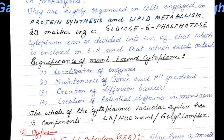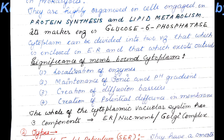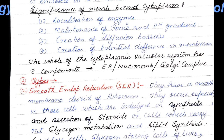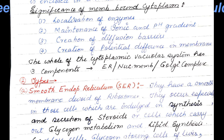The significance of a membrane-bound system is that it localizes enzymes, maintains ionic and pH gradients, creates diffusion barriers, and creates potential difference in the membrane. As far as types of endoplasmic reticulum, we have two kinds: smooth endoplasmic reticulum and rough endoplasmic reticulum.